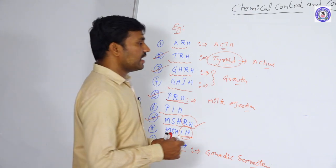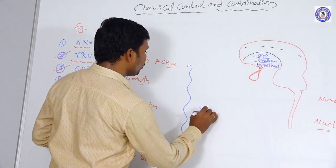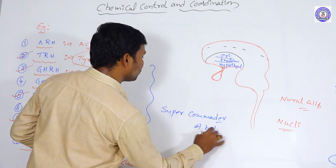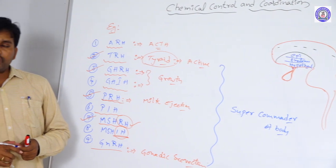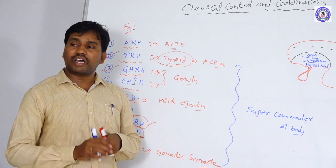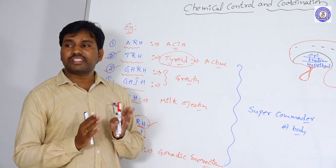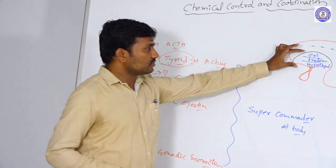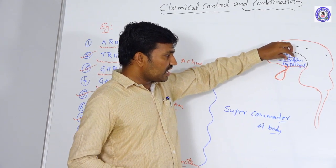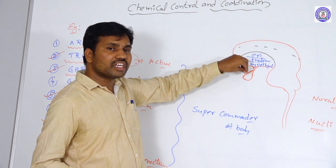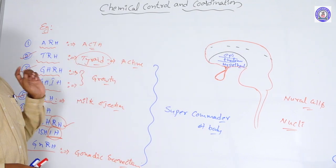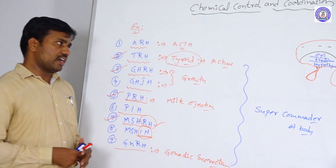That is why the hypothalamus is called the 'super commander of the body' — all commands come from the hypothalamus. It is also called the central controlling center. Whatever secretions are released from the hypothalamus control all endocrine secretions of the body. This is the hypothalamus — the first endocrine gland of the body.